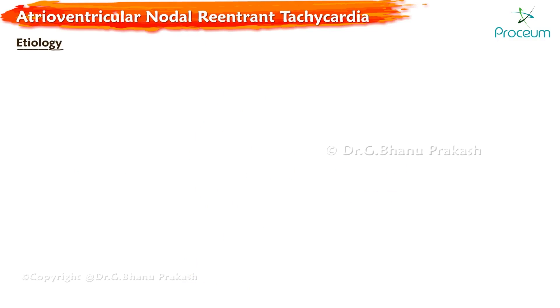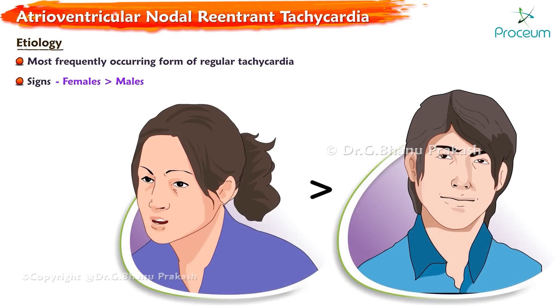AVNRT is the most frequently occurring form of regular tachycardia. More females than males have signs of AVNRT, with a ratio of approximately 3 to 1.